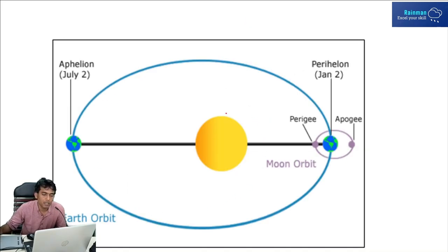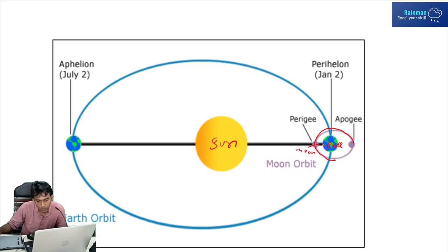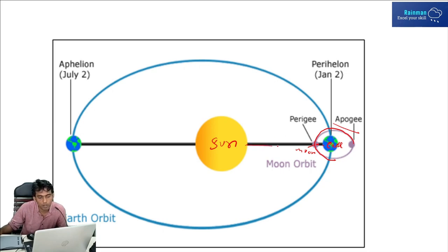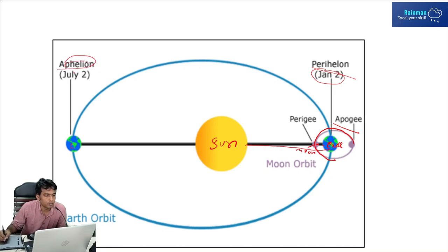So again, this is the Earth's orbit around the Sun. This is our Sun, this is our Moon, and this is our Earth. The Moon is moving around this orbit. The nearest point to Earth in that orbit is called Perigee; the farthest point is called Apogee. For Earth relative to the Sun, the nearest point is called Perihelion — it occurs on January 2nd — and the farthest point, Aphelion, occurs on July 2nd.